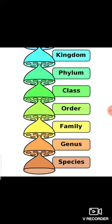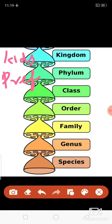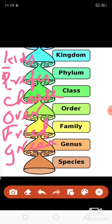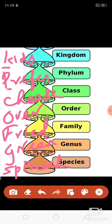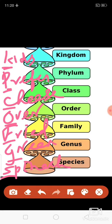To help memorize the order, here is a mnemonic: for Kingdom — Kids; Phylum — Prefer; Class — Cheese; Order — Over; Family — Fried; Genus — Green; Species — Spinach. If you memorize this sentence 'Kids Prefer Cheese Over Fried Green Spinach,' it will help you write the proper order: Kingdom, Phylum, Class, Order, Family, Genus, Species.